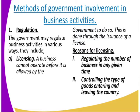One of the ways is by use of regulation. The government may regulate business activities in various ways. One method is through licensing. A business cannot operate before it is allowed by the government to do so. All business organizations, starting with sole proprietorship, should have a license in order to start. This is done through the issuance of licenses.